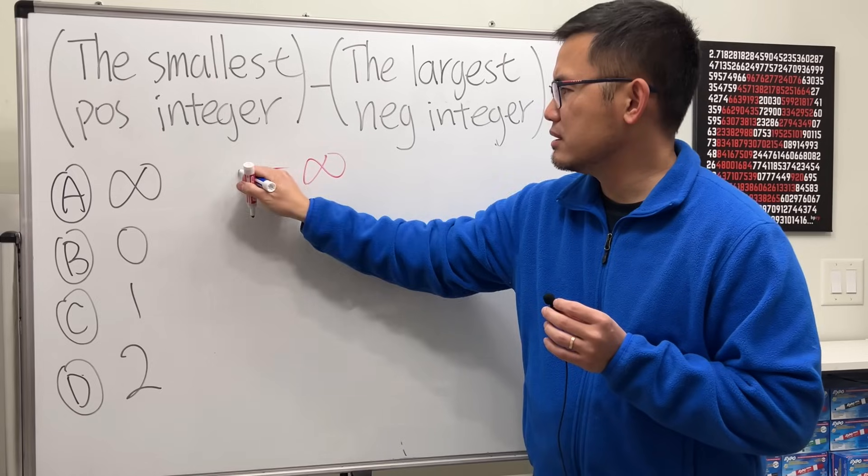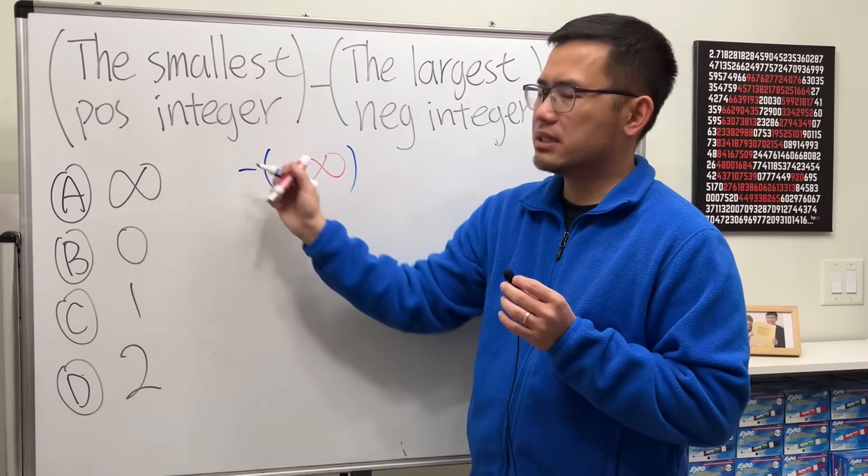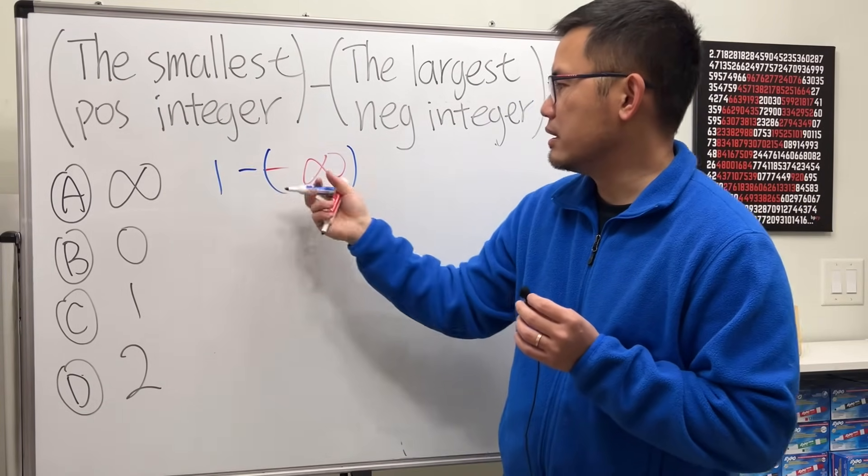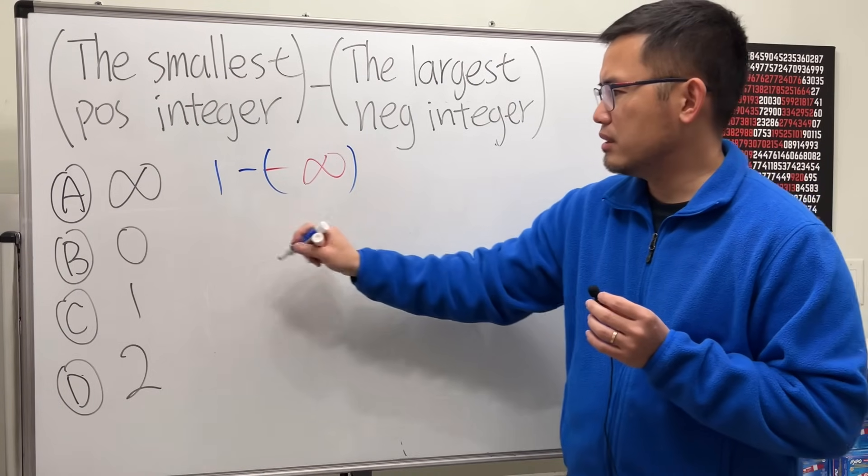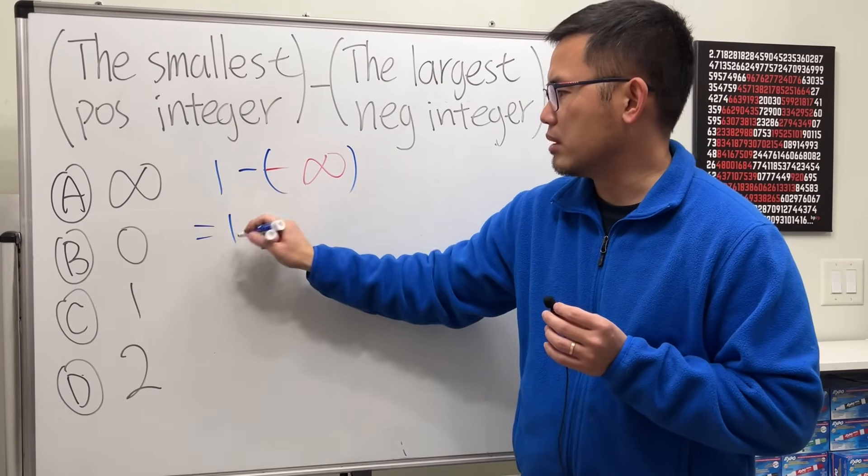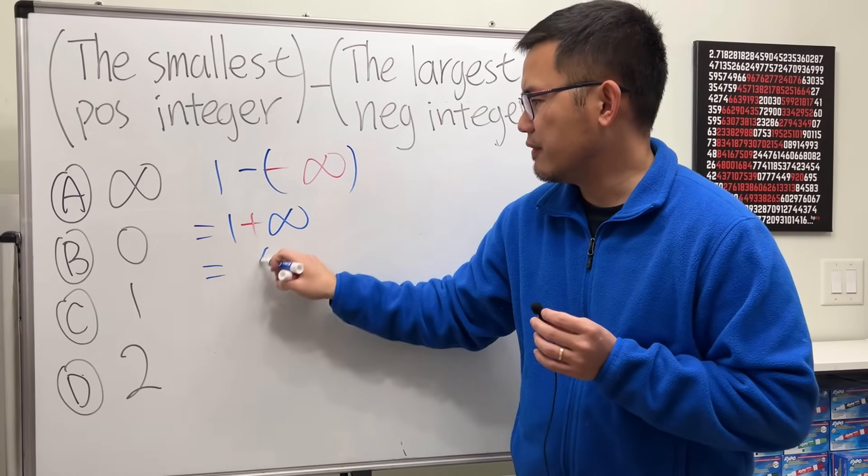And then we have the minus, and the smallest positive integer is just one. So we are doing one minus negative infinity, and then of course that will become a plus. One plus infinity, that should be infinity, right?